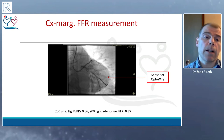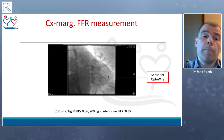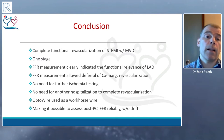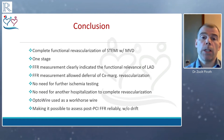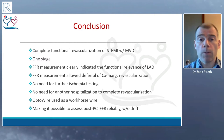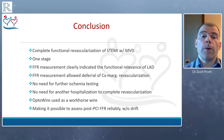Then we moved to the circumflex. We placed the wire in the distal part of the large marginal, and after giving IC nitro, the Pd/Pa ratio was 0.86 but the FFR was non-significant at 0.85. So we were quite confident to leave that circumflex lesion alone. In this case, we had the possibility of completely and functionally revascularizing this inferior STEMI patient with multivessel disease in one stage, which is important especially during the COVID pandemic. The FFR clearly indicated the functional significance of the LAD and allowed us to defer the circumflex marginal revascularization.